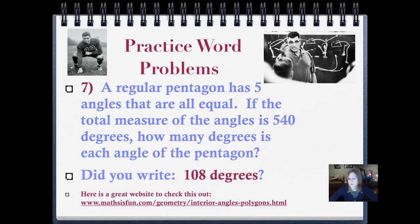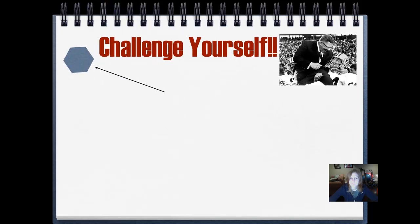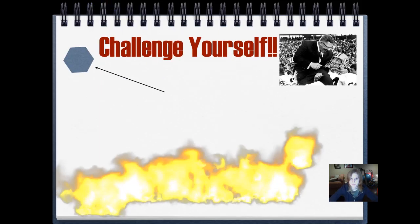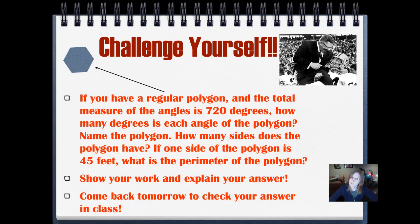Here's a really cool website. You can't click on this link, but you can write this down and then go see how you can make all of these different shapes using triangles. And you can learn some pretty advanced stuff about the measure of angles too. Those of you who are challenging yourself, that website might help you on this question. If you have a regular polygon and the total measure of the angles is 720 degrees, how many degrees is each angle of the polygon? Name the polygon. How many sides does the polygon have? If one side of the polygon is 45 feet, what is the perimeter of the polygon? You might have to do some extra research to figure this out. You could look in your math text, or you could Google it, or you could go to websites. Show your work and explain your answer and come back tomorrow ready to check it.